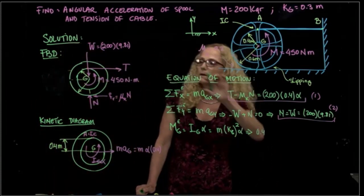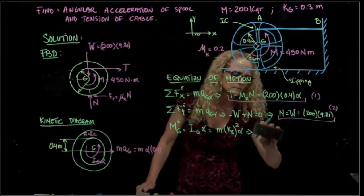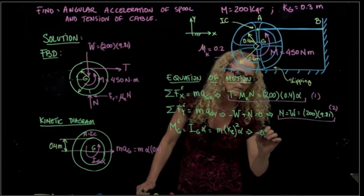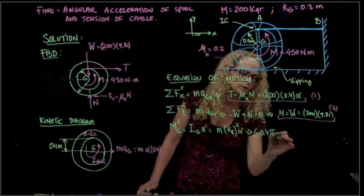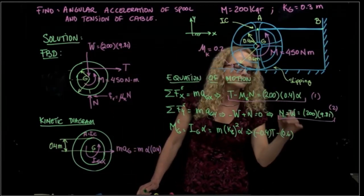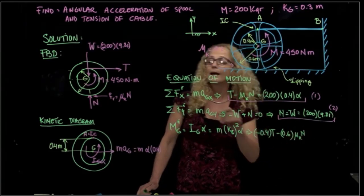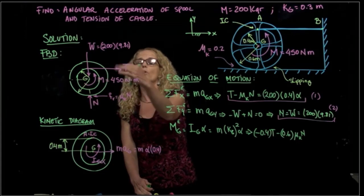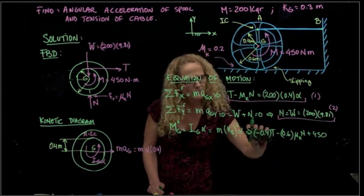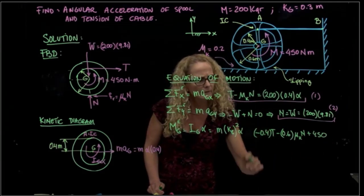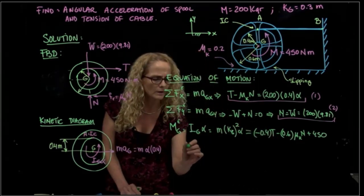0.4 is negative. So I have the tension negative times 0.4, minus 0.6 times the friction, which is the coefficient times the normal. And then I have also the applied moment, which is positive, plus 450. And actually make that equal right here, so that we have the equation.